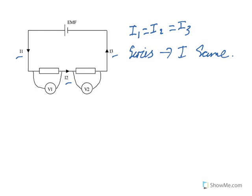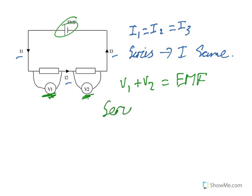Kirchhoff's second law relates to energy, which is related to voltage. We've got V1 and V2 across circuit elements. Whatever energy is used across each element, when we add it up, it must equal the battery's EMF. So V1 plus V2 equals the EMF. Remember, EMF and voltage are the same thing — just different terminology; EMF is often used for batteries. In a series circuit, voltages add up to the battery's EMF.